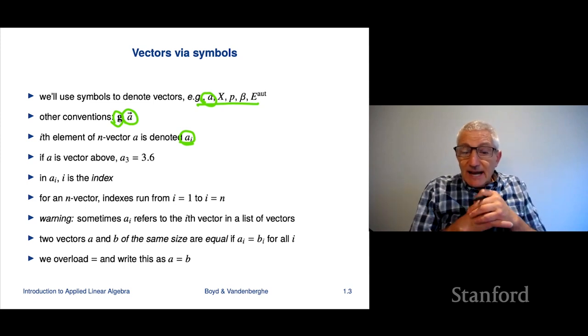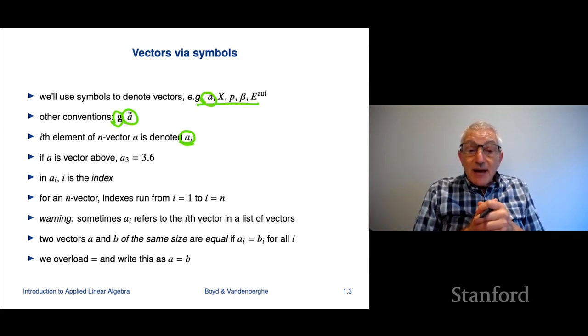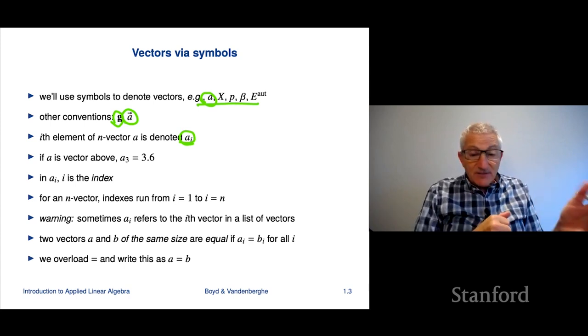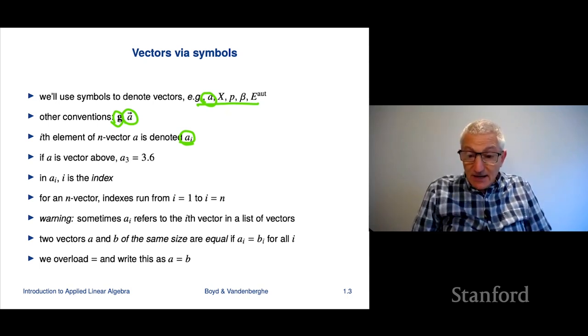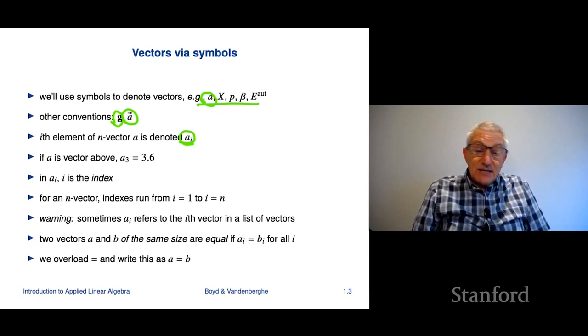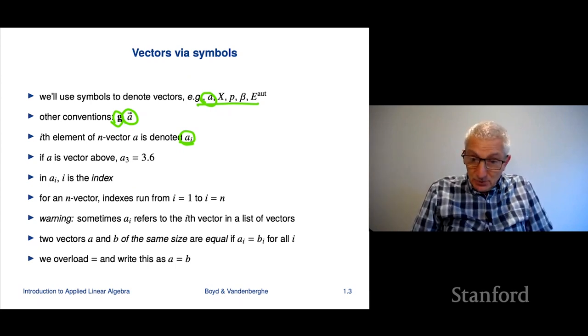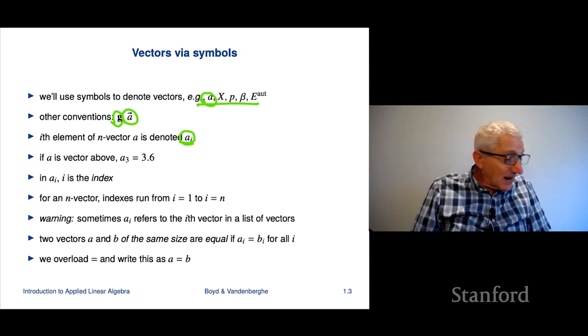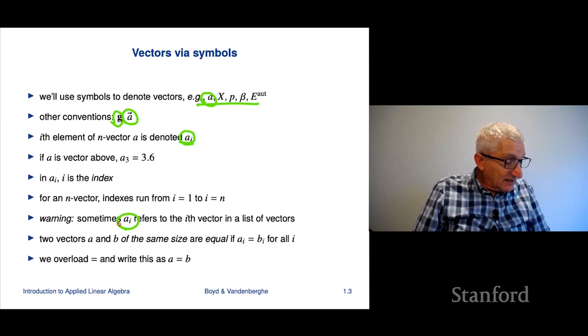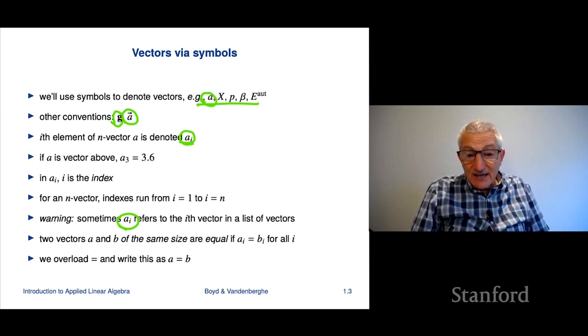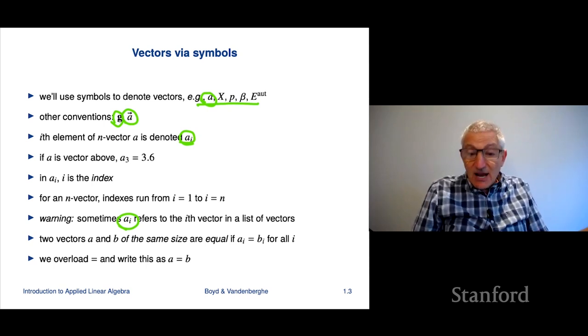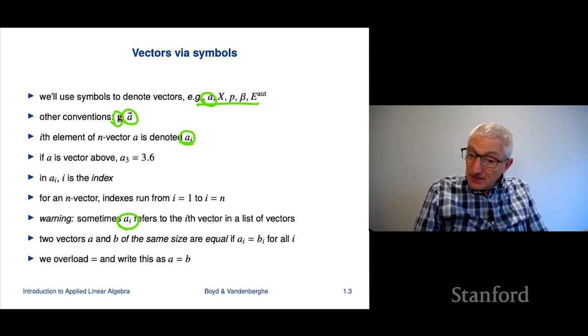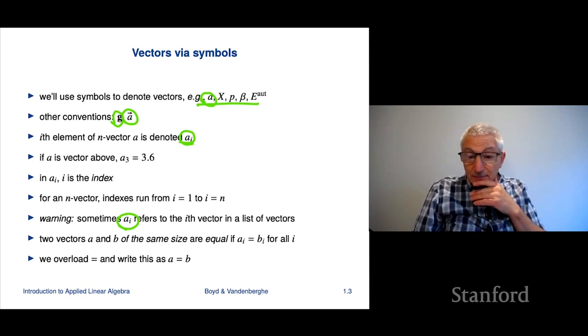So i is gonna be the index. In mathematical notation, you index a vector from i equals 1 to n. So a sub 1 is what we'd say is the first entry, and a sub n is the last entry. Now, there's gonna be some ambiguity in notation. Sometimes a sub i is not going to mean the element of a single vector a, but actually we're gonna be talking about a list of vectors, and a sub i is itself a vector. We'll talk more about that when we come to that, but it's just something to be aware of.